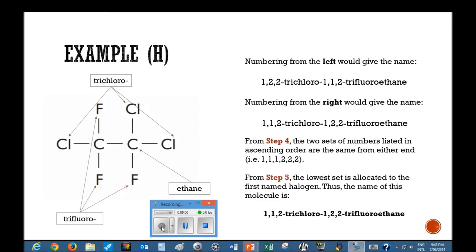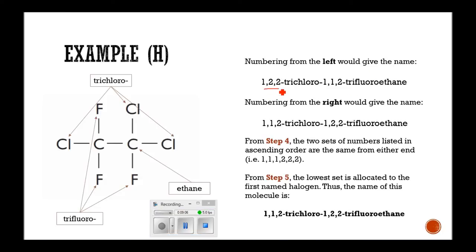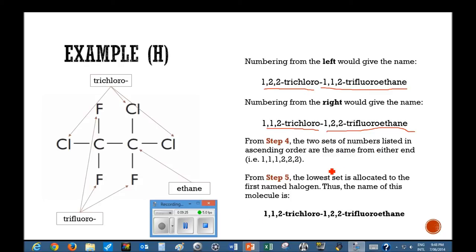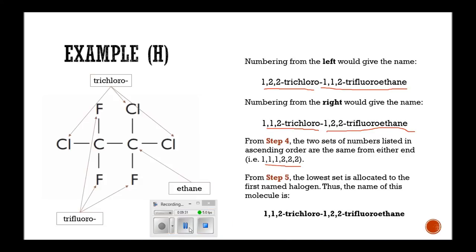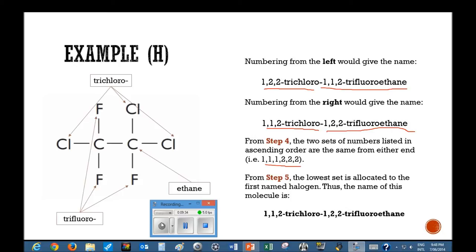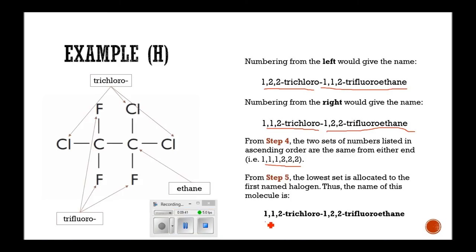Similarly, in this example, when we number from the left we get 1,1,2-trichloro-1,2,2-trifluoroethane. When we number from the right, we get 1,2,2-dichloro-1,2,2-trifluoroethane. Again, the sets of numbers listed in ascending order are the same from either side. So the lowest set is allocated to the first named halogen. Therefore, this molecule is named 1,1,2-trichloro-1,2,2-trifluoroethane.